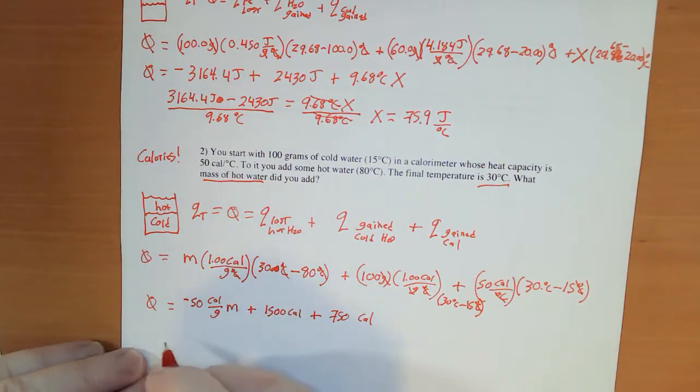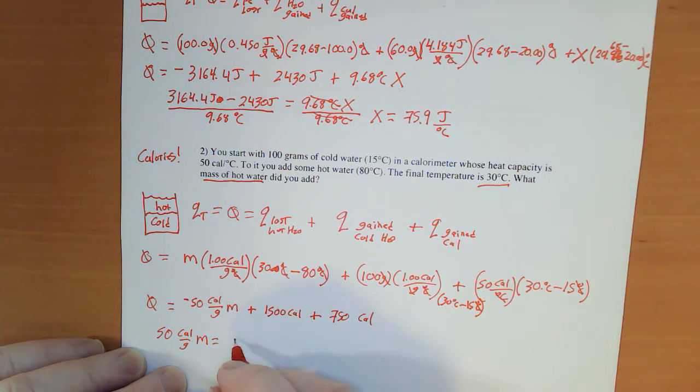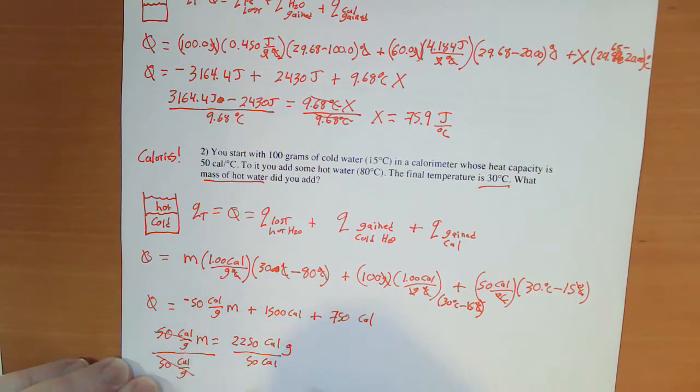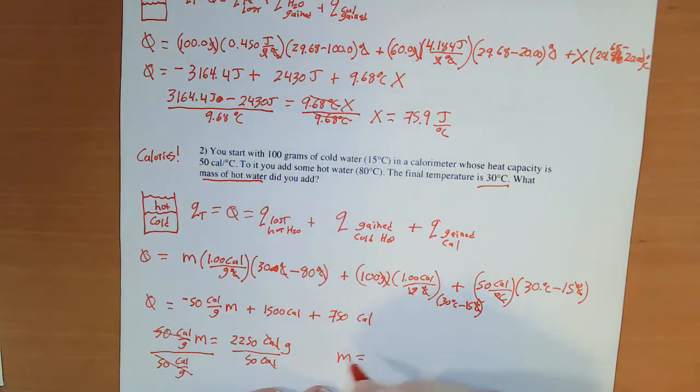And all of this equals 0. Rearranging, I now have 50 calories per gram M equals, I moved that over to the other side, 1500 plus 750, so that's 2250 calories. Divide by 50 calories per gram, gram moves upstairs. That cancels completely, calories cancels, and M equals 45 grams.